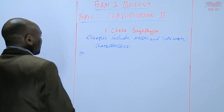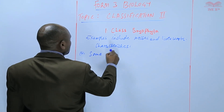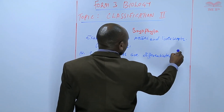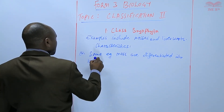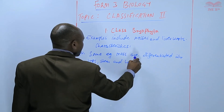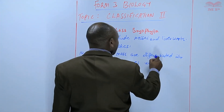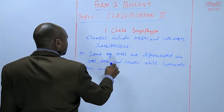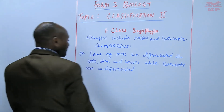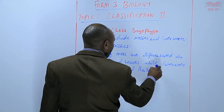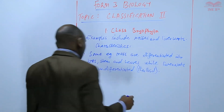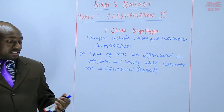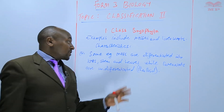So we can basically say that some members, e.g. the moss, are differentiated into roots, stem, and leaves, while liverworts are undifferentiated — what we refer to as thaloid. We are going to look at the structure of the moss and the structure of the liverwort, and we'll be able to see what we mean when we say one is differentiated and the other is not.